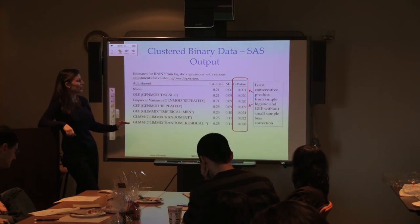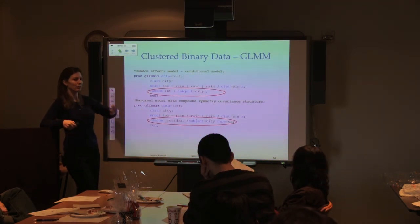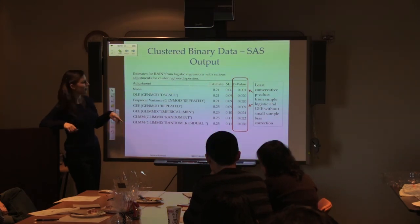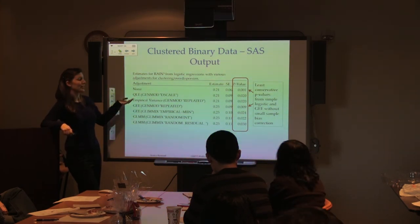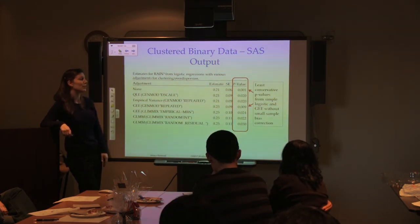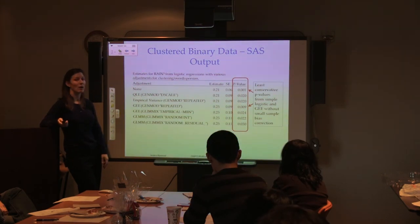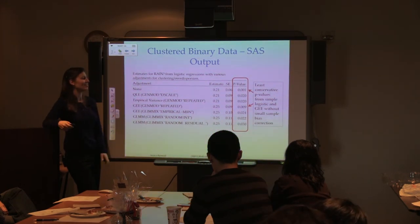Comparing output across models for the toxoplasmosis data focusing on the rain-cubed variable: the unadjusted logistic regression yields a very small p-value with small standard errors — consistent with over-dispersion causing underestimation. All models accounting for over-dispersion have larger standard errors and p-values around 0.02. Importantly, GEE without small-sample bias correction yields a p-value of 0.009, almost as small as the unadjusted model — highlighting the importance of using the MBN correction to avoid inflated type 1 errors.